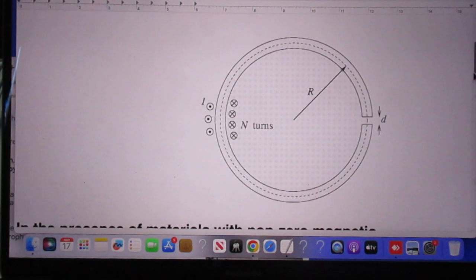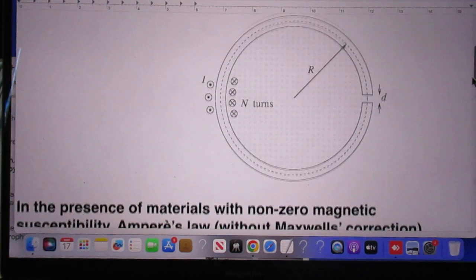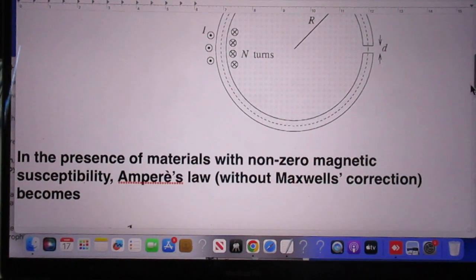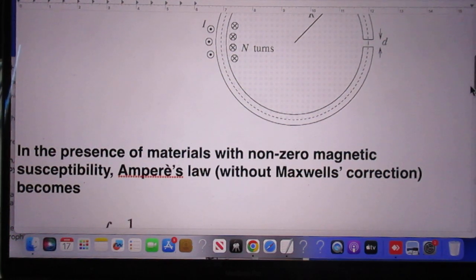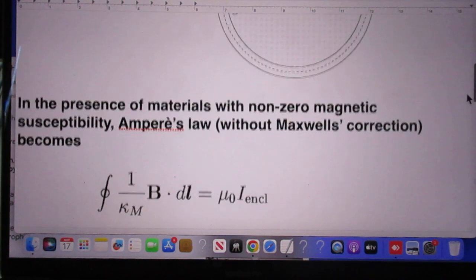Here you see the geometry, I will get back to that very shortly. In the presence of materials with non-zero magnetic susceptibility, Ampere's law without Maxwell's correction becomes this.